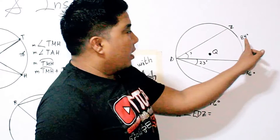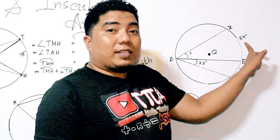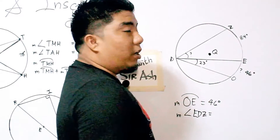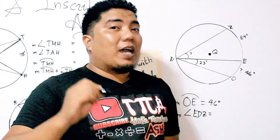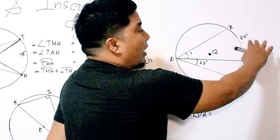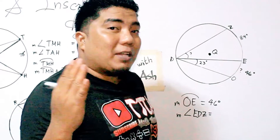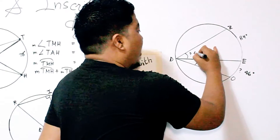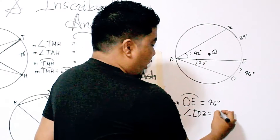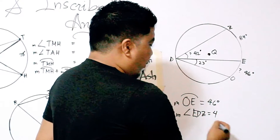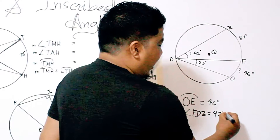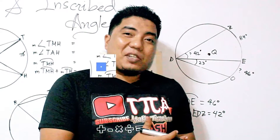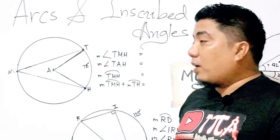For angle EDZ, the given is the intercepted arc and the inscribed angle is unknown. The inscribed angle is one-half of the intercepted arc, so 84 divided by 2 equals 42 degrees. Therefore, the measurement of angle EDZ is 42 degrees.